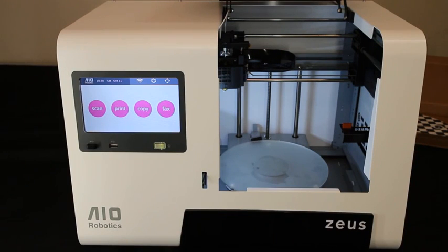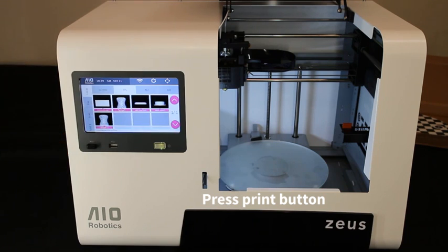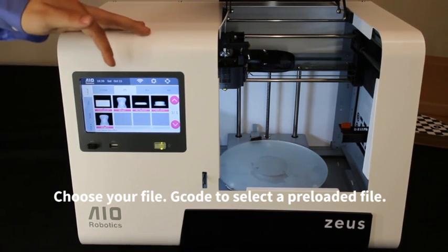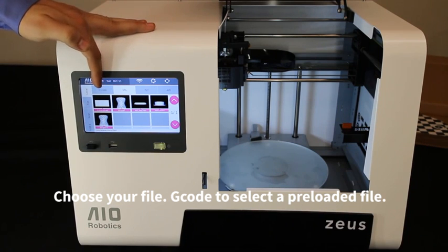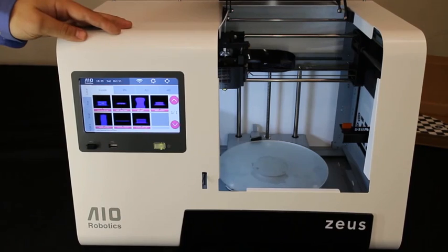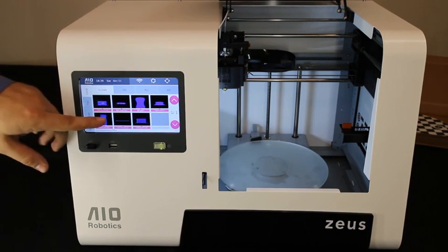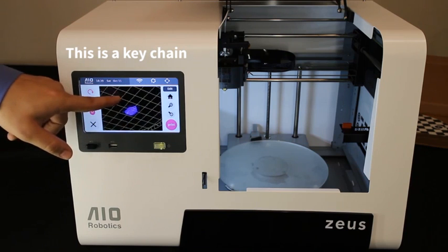To start the first print, you have to press the print button on the UI. Now we have to choose between printing an STL file or a G-code file. The G-code file is a pre-sliced print file and let's just choose one of these files. This is a little keychain that we want to print.